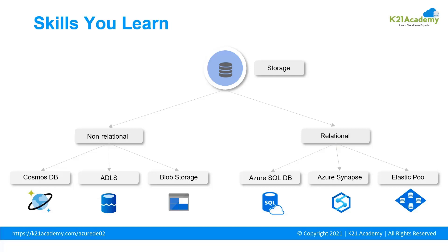On-premises SQL Server lets you create multiple databases — either transactional or data warehouse. In the Azure cloud, Microsoft has segregated products accordingly: for a transactional system you use SQL Database, and for a data warehouse you use Azure Synapse. The elastic pool is used when you need scaling for a transactional system — you can quickly scale up or scale down based on your requirement.